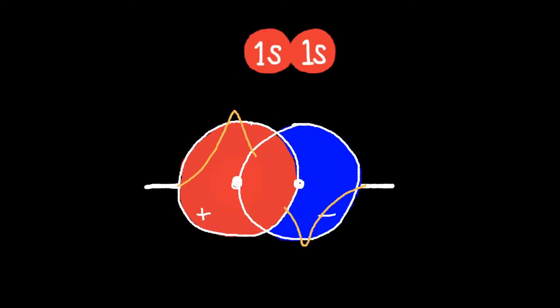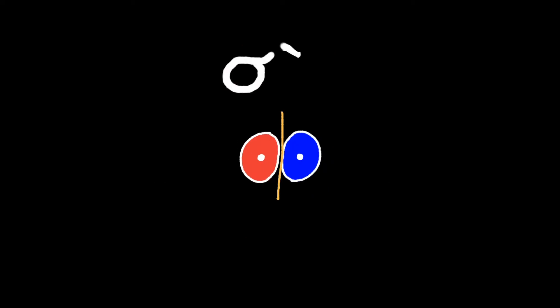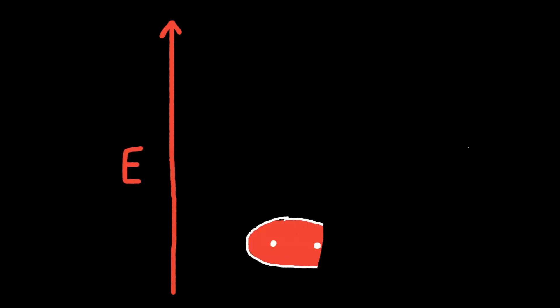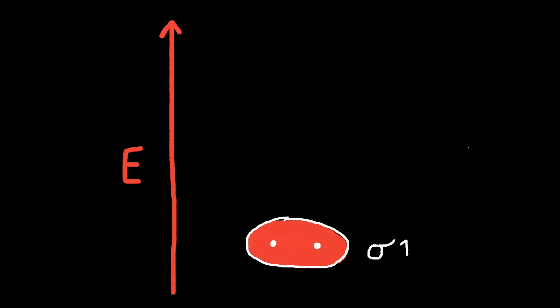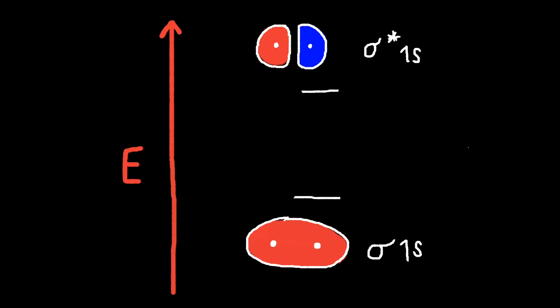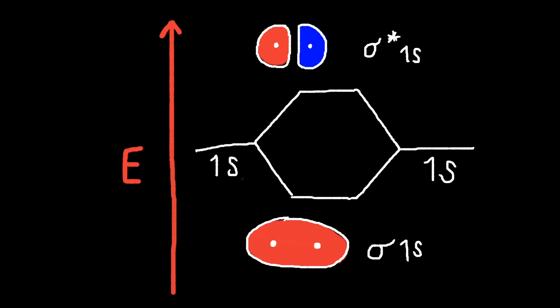The orbital created is called a sigma bonding 1S orbital. The second way that S orbitals can combine is destructively. The green line shows that there is a smaller area where electrons can be found. This is an anti-bonding sigma orbital. We can draw an MO diagram for the sigma 1S bonding and anti-bonding orbitals. 1S orbitals contribute electrons to the diagram. Anti-bonding orbitals are higher in energy because there are fewer areas where electrons can be.